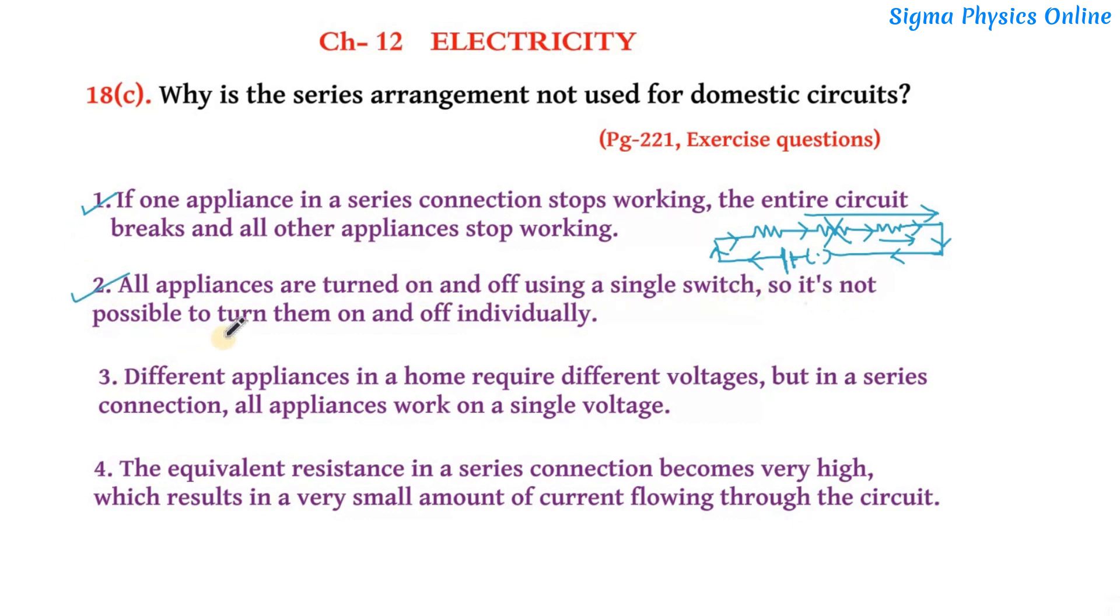The second one is: all appliances are turned on and off using a single switch, so it's not possible to turn them on and off individually. As you can see in this circuit, there is only one switch which is operating or controlling all these circuit elements. Now if I want to switch off any particular appliance, say this one, then it won't be possible to switch it off individually. We cannot control the working of individual appliances in the case of a series connection.